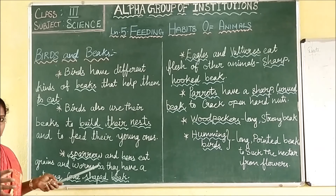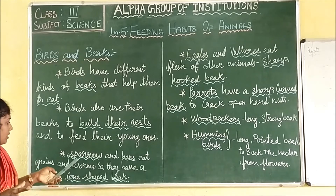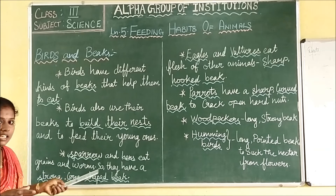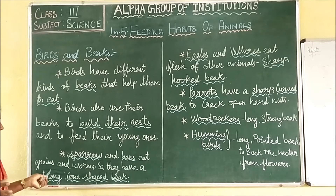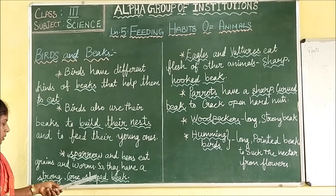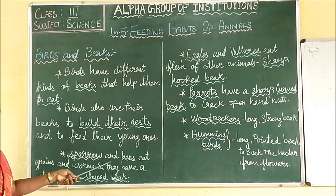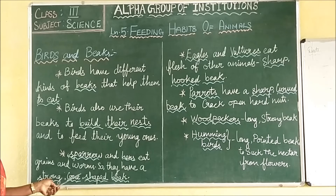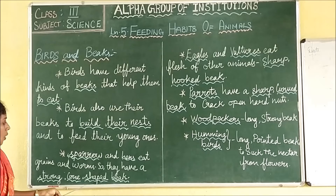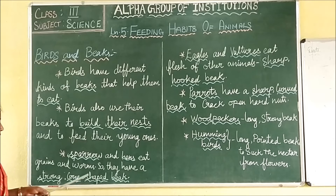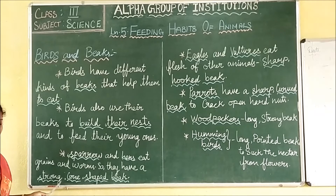We can discuss some examples of birds. Sparrow and hens eat grains and worms — earthworms, small insects, types of worms. They have a strong cone-shaped beak. To eat the grains and worms, they will be having a strong cone-shaped beak.